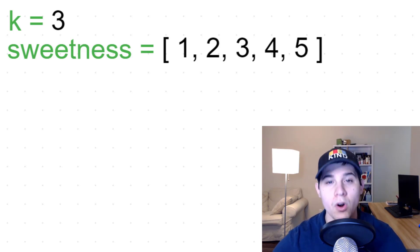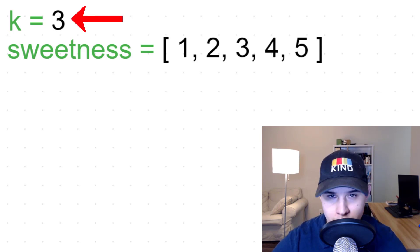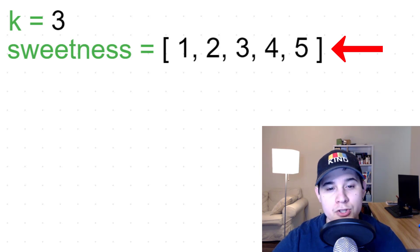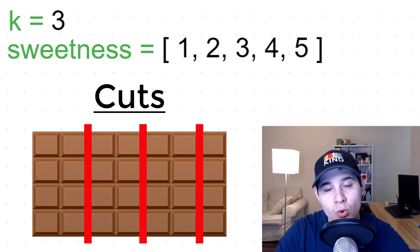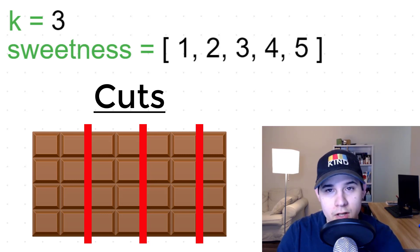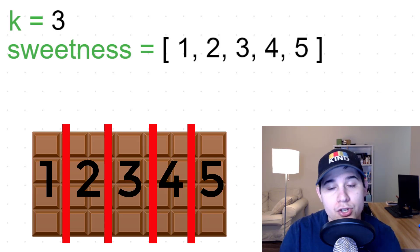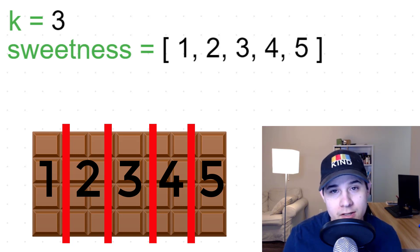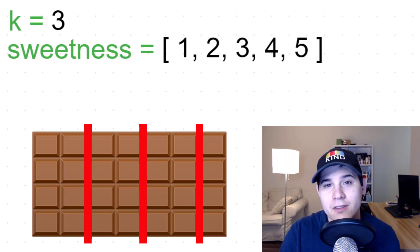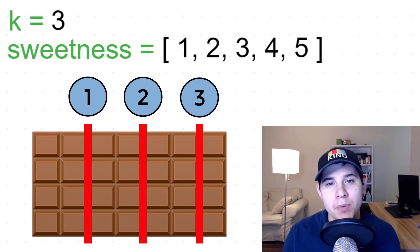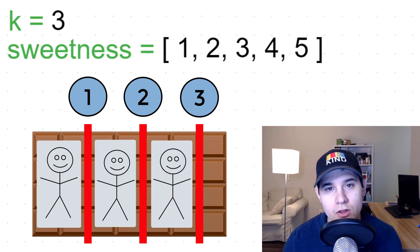Let's make sure we understand what we're required to do. Let's say we have K equal to three, and then we have a sweetness array with the numbers one, two, three, four, five. K is the number of friends that we have to share our chocolate bar with — you can also think of K as the number of cuts. Our sweetness array represents the size of our chocolate bar, where each index is a section and the number at that index is the sweetness level. We're going to cut the chocolate bar K times, give the bigger pieces to our K friends, and take the smaller piece for ourselves. So we'll always have at least K plus one chunks.